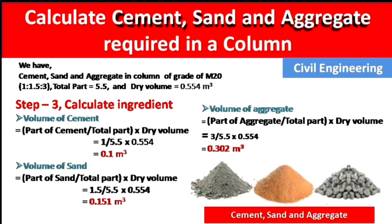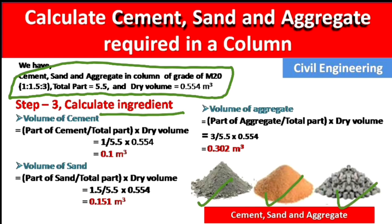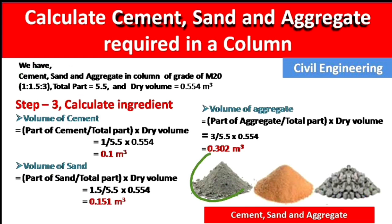In Step 3, we calculate the ingredients — cement, sand, and aggregate — for M20 grade concrete whose ratio is 1:1.5:3. The total parts = 1 + 1.5 + 3 = 5.5. The dry volume we calculated is 0.554 m³. Now we calculate how much cement, sand, and aggregate is required for this volume.